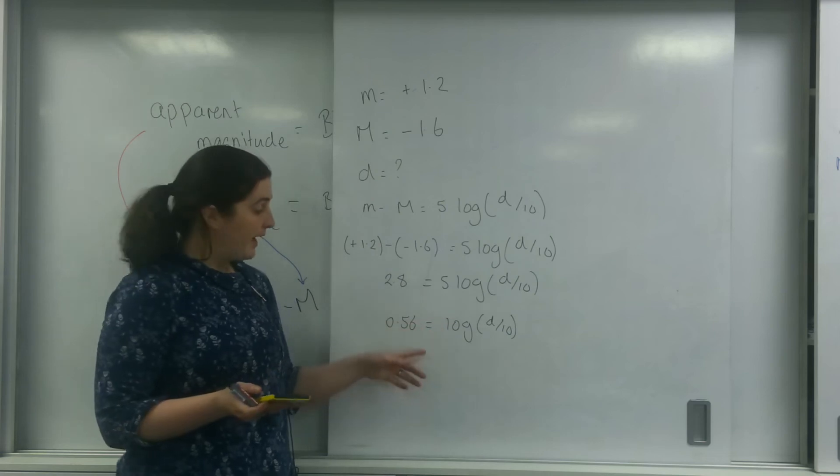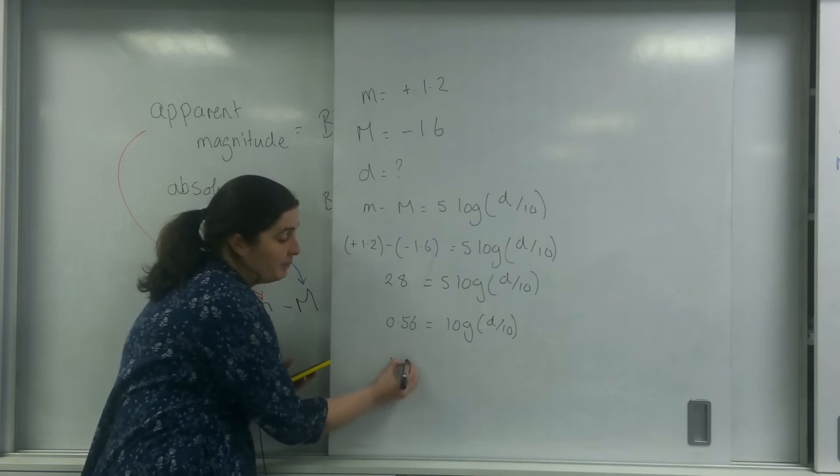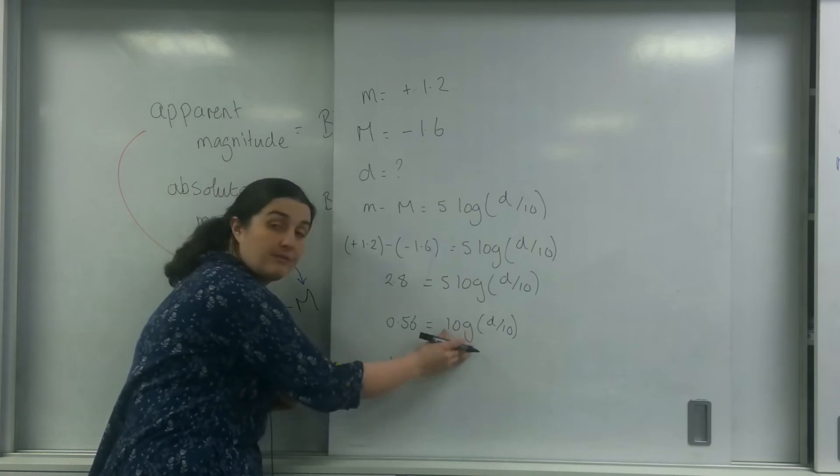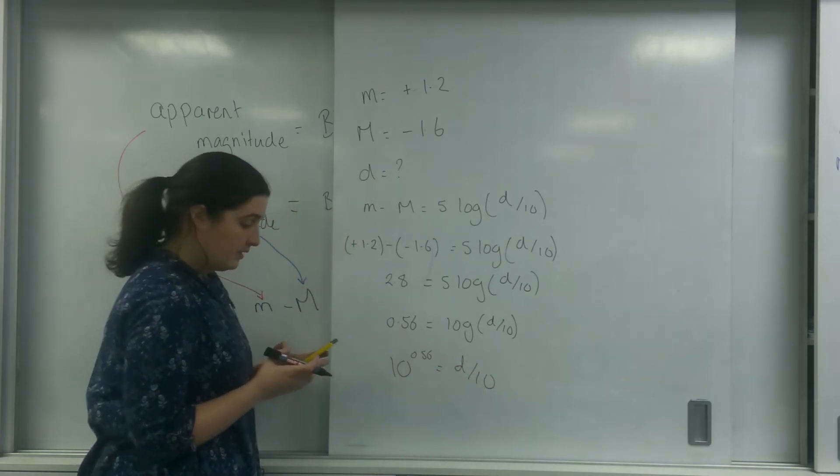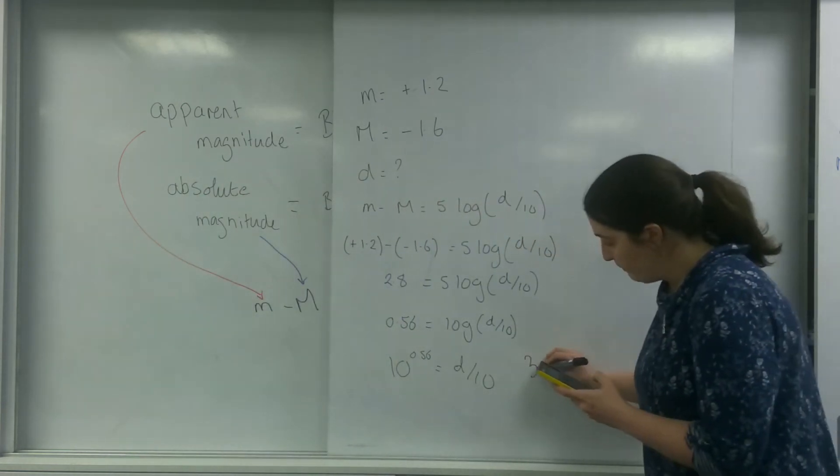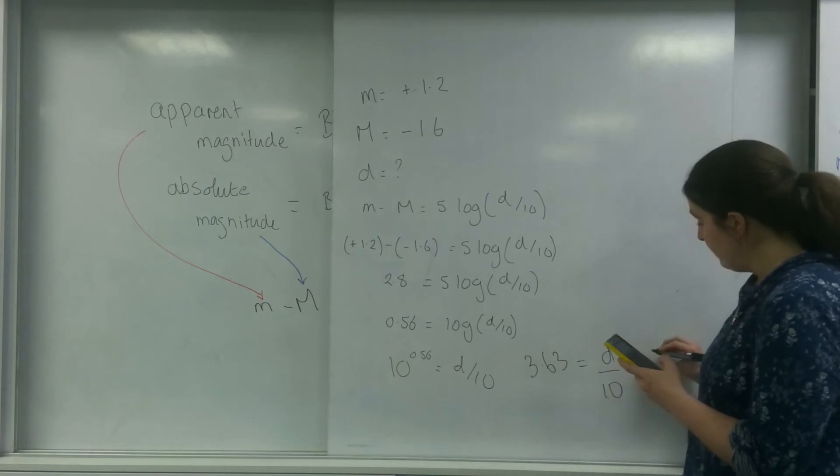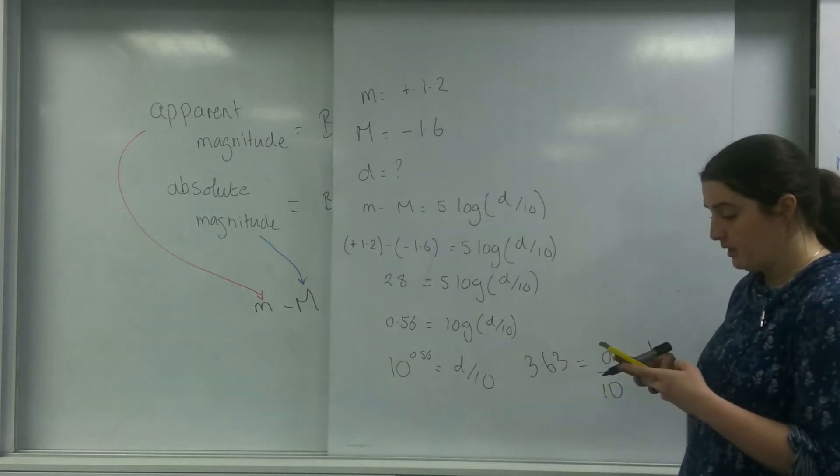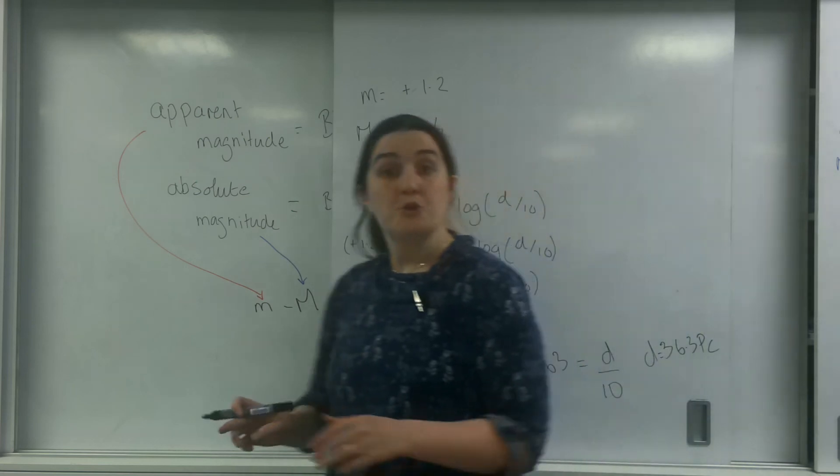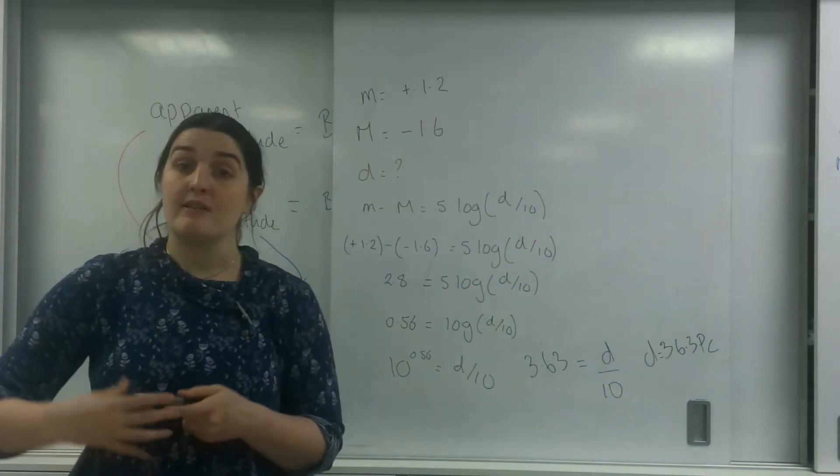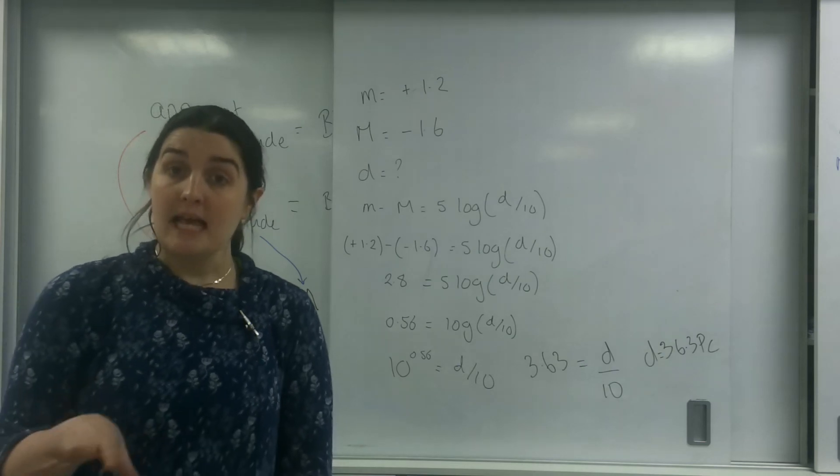Now I'm going to put this to the power. So this is log to the base 10. So to undo the log, it will be 10 to the power 0.56. And that will get rid of the log for me. So 10 to the power of that. I have 3.63 d over 10. So d is 10 times 3.63, which is 36.3 parsecs. So it's quite far away. Which is why when I gave it absolute magnitude, it became brighter.